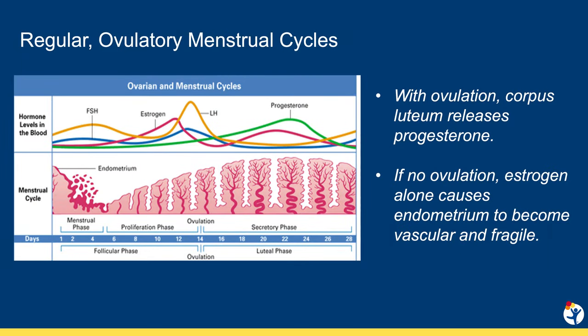The first years of menstrual bleeding are usually not characterized by superregular ovulatory menstrual cycles. When ovulation does occur, the corpus luteum releases progesterone, which matures the endometrium, and if pregnancy doesn't happen, there's an organized and concerted shedding of the entire lining.